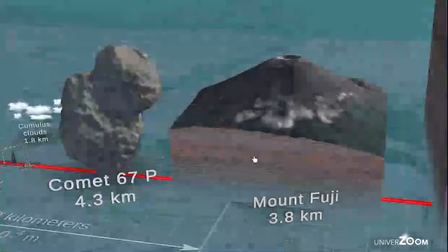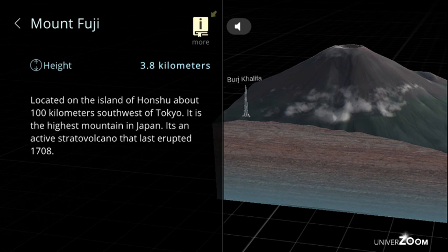Mount Fuji, height: 3.8 kilometers. Located on the island of Honshu about 100 kilometers southwest of Tokyo. It is the highest mountain in Japan. It's an active stratovolcano that last erupted 1708.